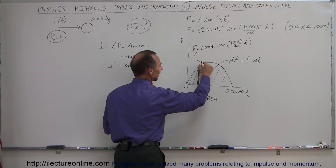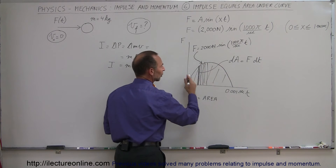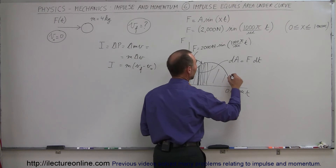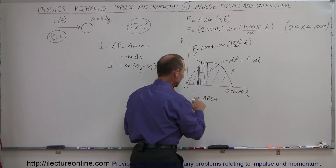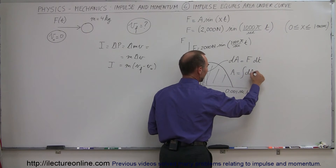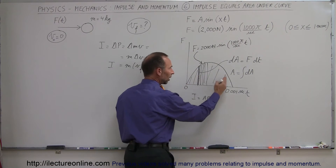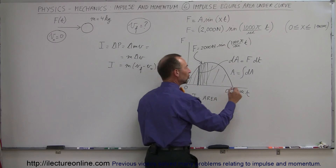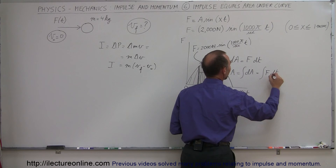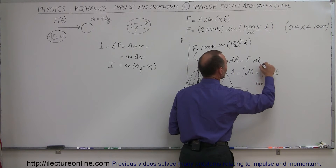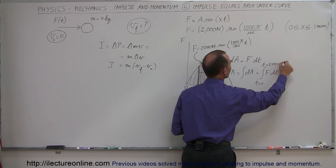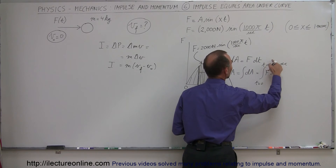If we want to find the whole area, we're going to slice this up into an infinite number of little slices and add them all up — that's known as integration. Therefore, the total area, which equals the impulse, is equal to the integral of all the little dA's: the integral of force times dt, with time going from 0 to 0.001 seconds, which is a millisecond.